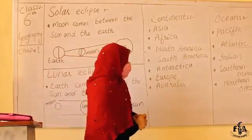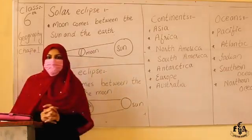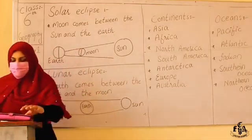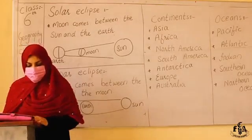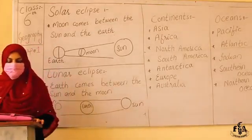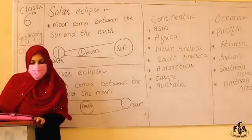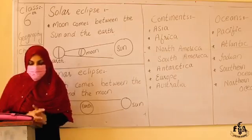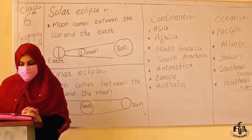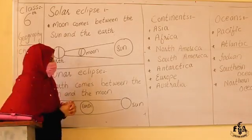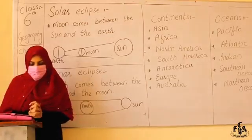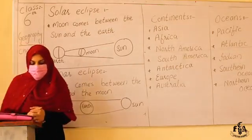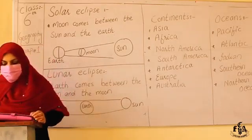Europe is the sixth largest continent, and Australia is the smallest continent. Now regarding oceans: 71% of the Earth's surface is covered with water. A huge mass of water is called an ocean. There are five oceans in the world: the Pacific Ocean, which is the largest; the Atlantic Ocean, the second largest; the Indian Ocean, the third largest; and then the Southern Ocean and the Arctic Ocean.